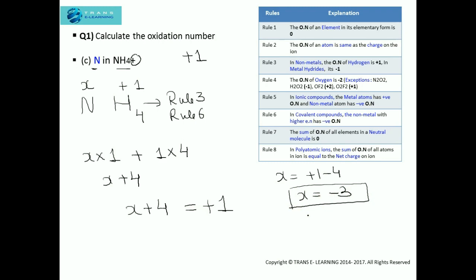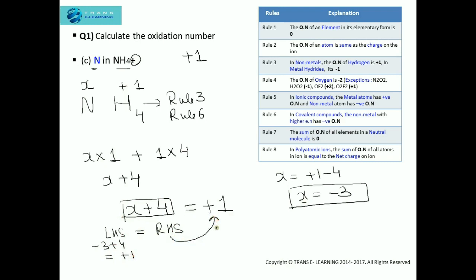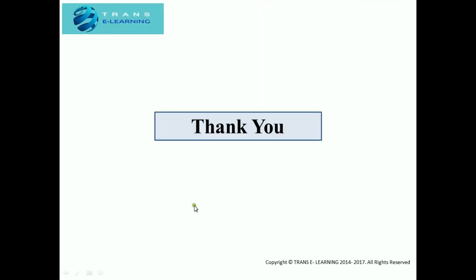To verify this answer, the left hand side should equal the right hand side. Substituting x equals minus three into the equation gives minus three plus four, which equals plus one. The right hand side is also plus one, so left hand side equals right hand side — this verifies our answer. Thank you very much for watching this video. For more videos, you can visit our website transelearning.com. Have a great day.